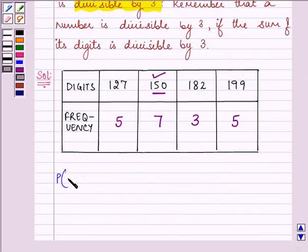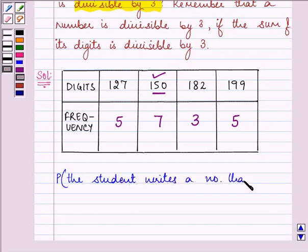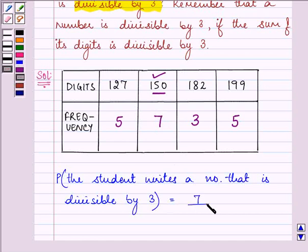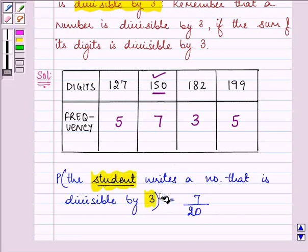We need to find out the probability that the student writes a number that is divisible by three. There are seven chances out of 20 that a number is selected by a student which is divisible by three.